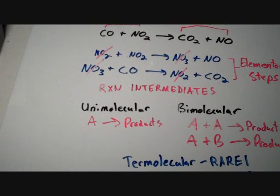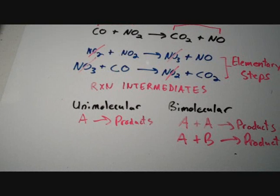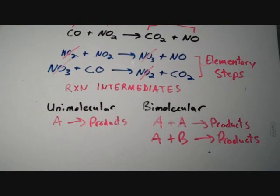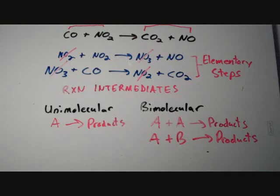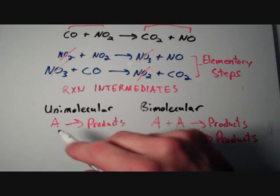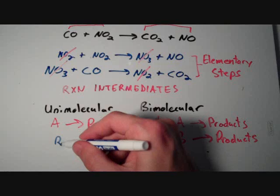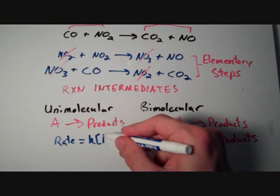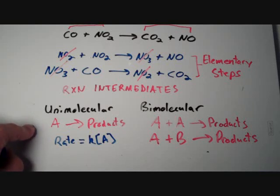Although the rate law for an overall chemical equation cannot be determined from the balanced equation alone — it must be determined by experiment — the rate law for elementary steps can be determined directly from their balanced equations. For a unimolecular elementary step, the rate law is: rate equals k times the concentration of A.